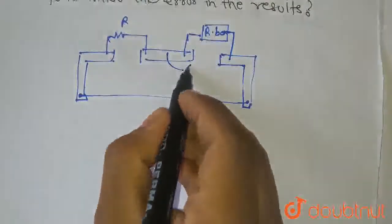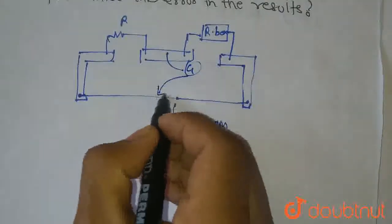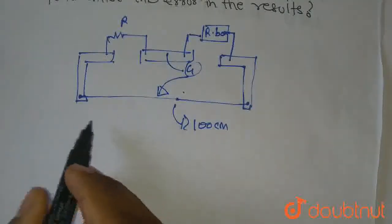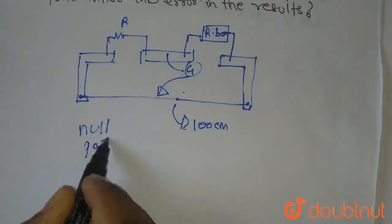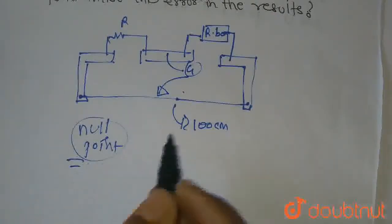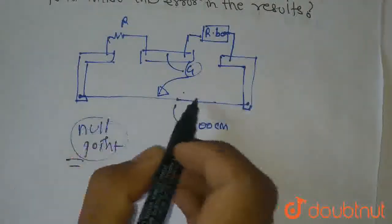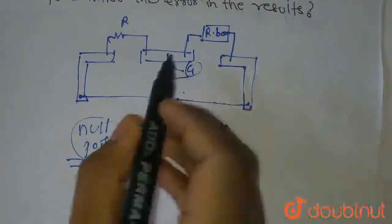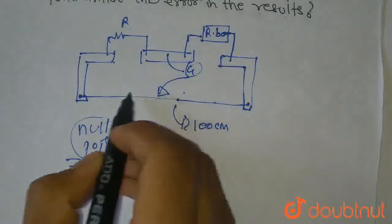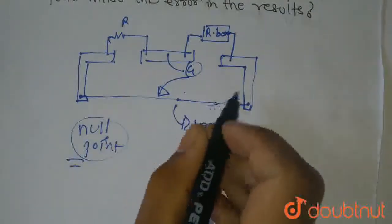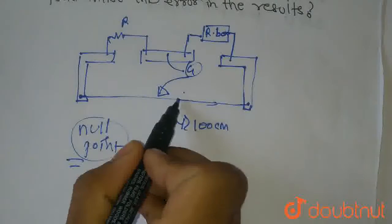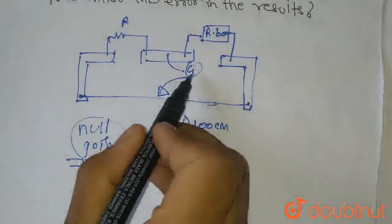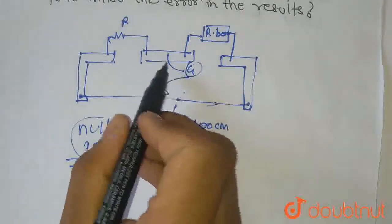And here I have a galvanometer with a jockey which is used to find the null point. So basically the null point, I will tell you about it. When we check this wire with the jockey, basically our aim is that the galvanometer deflection is zero, or that there is no current flow. At every point we touch the wire, we check that the deflection is zero.